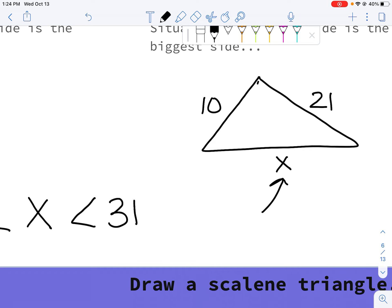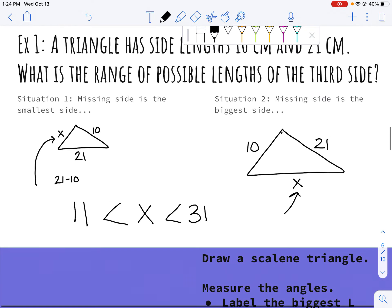So x has to be less than 31. It could be 30.9. It could be 30.5. It could be 30.2. So I don't want to put 30 here. I want to put 31 instead.